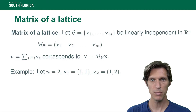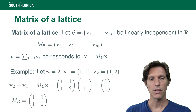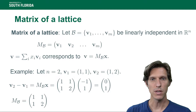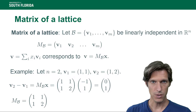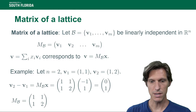So for example, in our Euclidean lattice defined previously, the basis is (1,1) and (1,2), and then the vector v2 minus v1 can be expressed as the product between the matrix of the basis and the vector (-1,1).